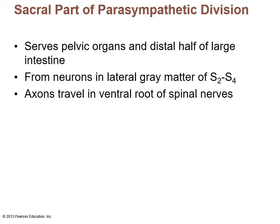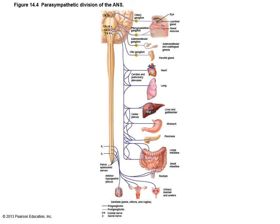The sacral division serves pelvic organs and the distal half of the large intestine. It comes from neurons in the lateral gray matter of S2 through S4, with axons traveling in the ventral root of spinal nerves. Because each presynaptic neuron goes almost directly to the postsynaptic neuron close to the individual organ, there is not much divergence — it is individual stimulation of effectors. So the parasympathetic response is not a full-body response; it is more of an individual organ type of activity.